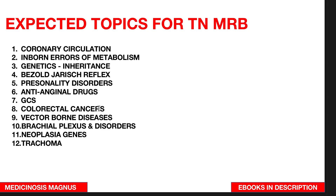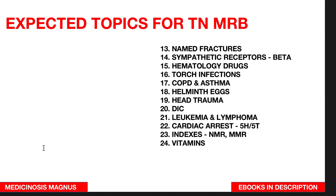Colorectal cancers — make sure you learn all the syndromes and vector-borne diseases and what diseases each vector causes. Brachial plexus — its nerve supplies and disorders. Neoplasia — you need to know the general concepts as well as the specific genes involved. In ophthalmology, learn about trachoma. In orthopedics, learn the eponyms — the named fractures.